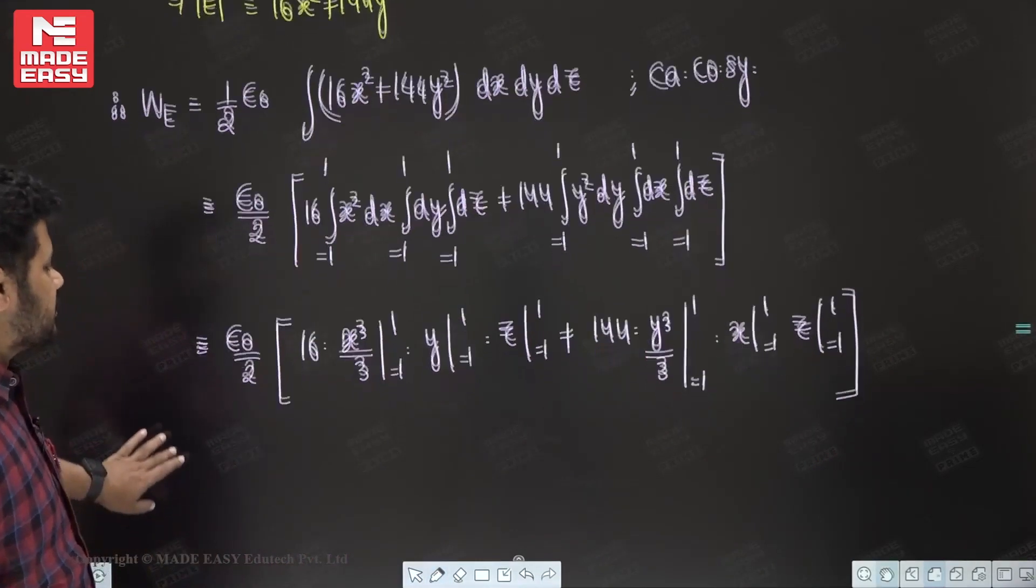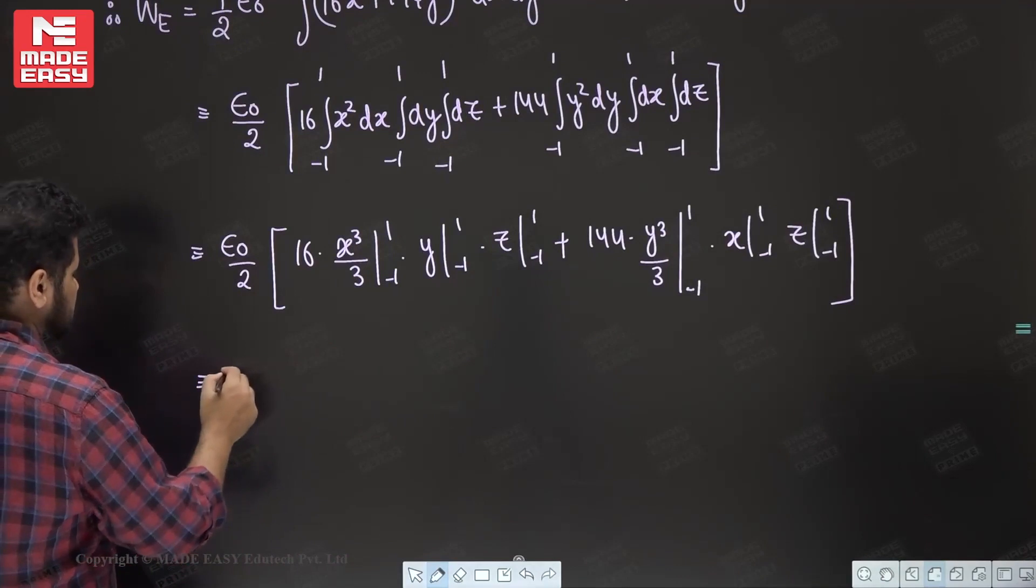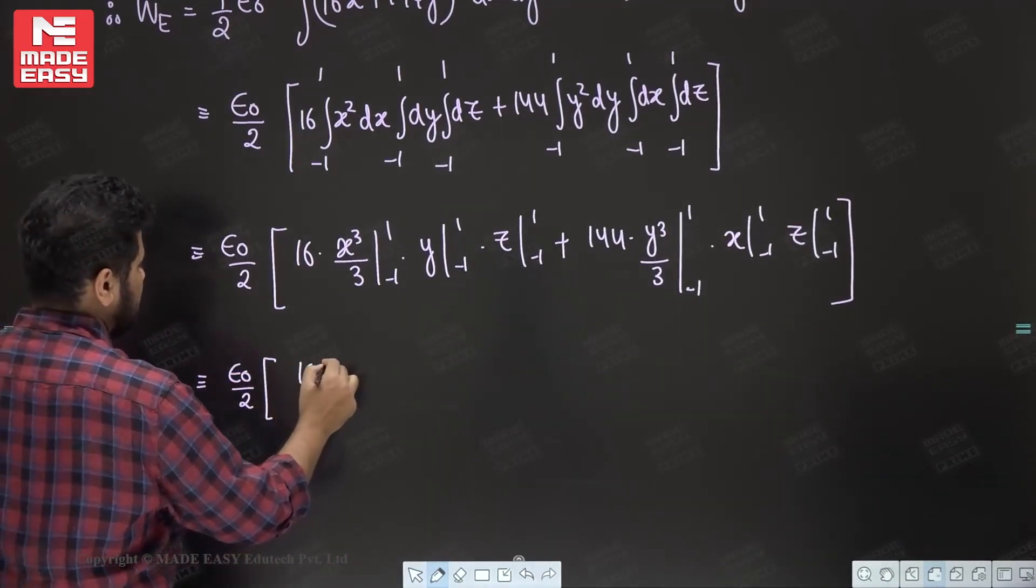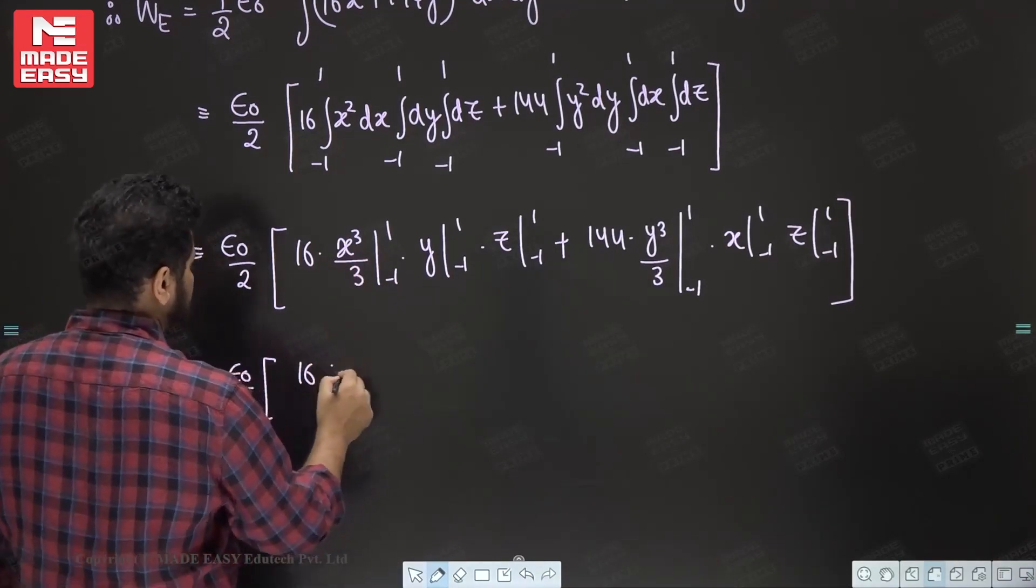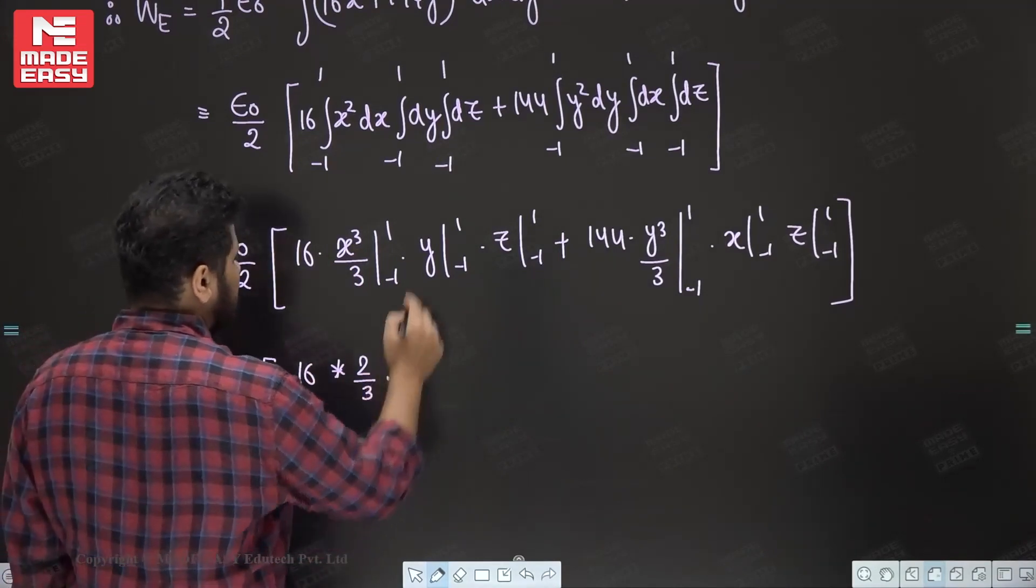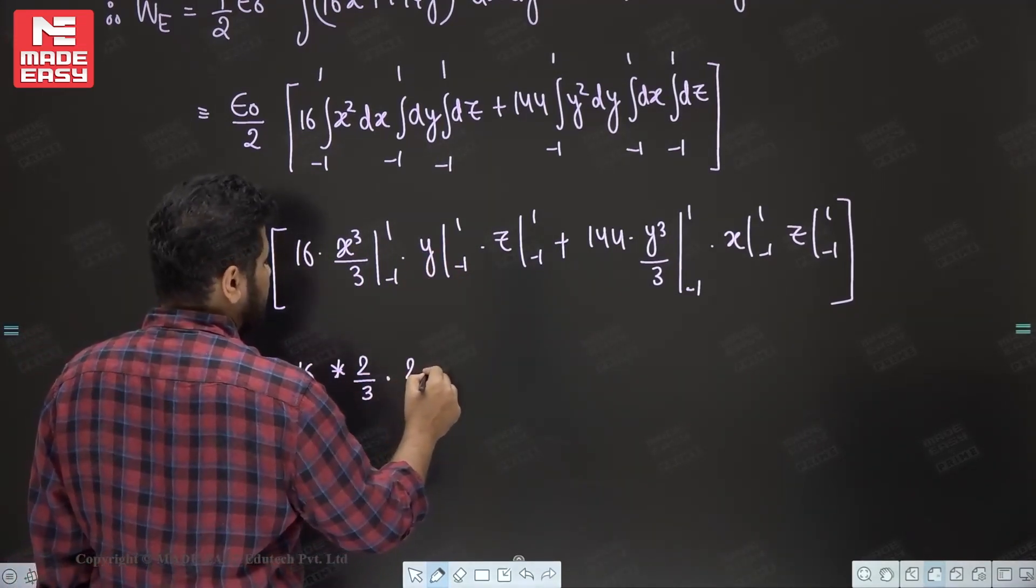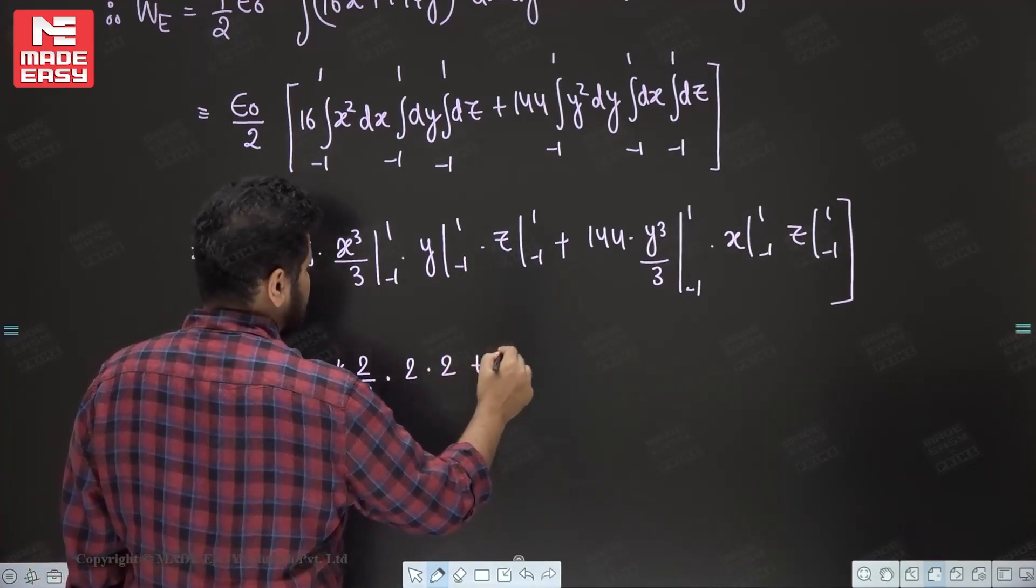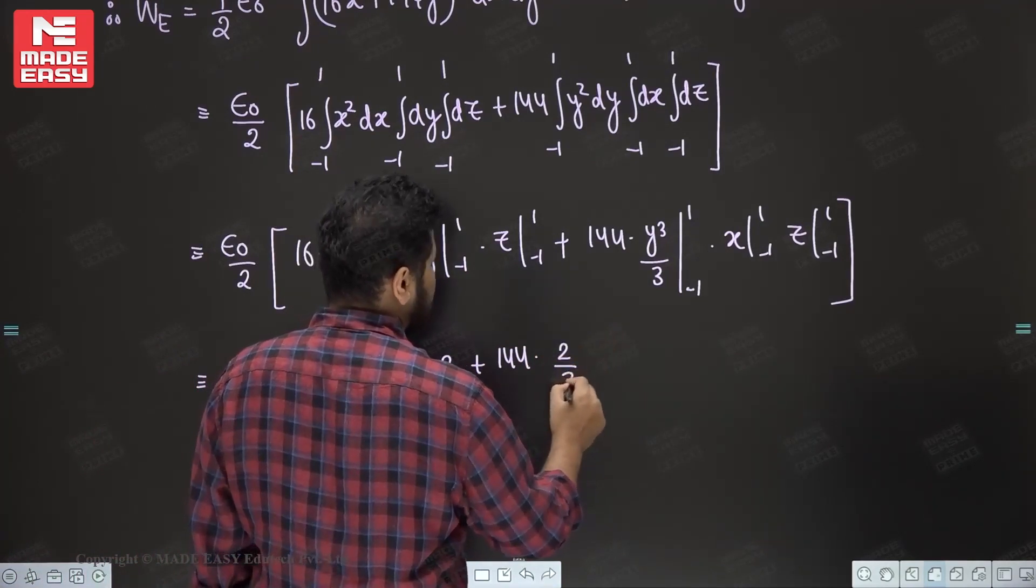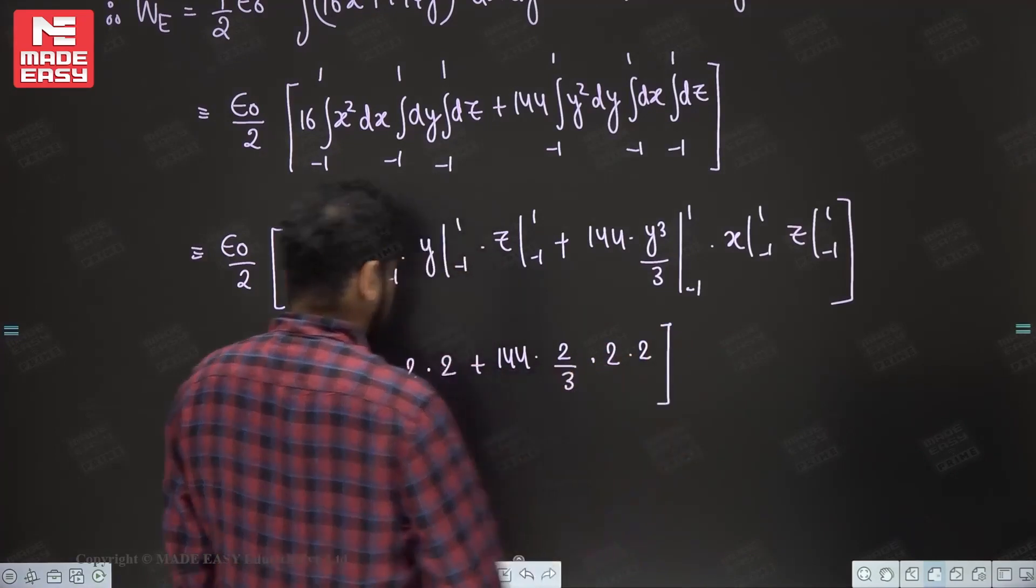Now we have to just calculate it. This is epsilon naught upon 2. Now this is your 16 into, now this is 1 minus 1, so it will be 2 by 3. And this will be 1 minus minus 1, so 1 plus 1, it is 2 times 2 plus 144 into this is 2 by 3 times 2 times 2.